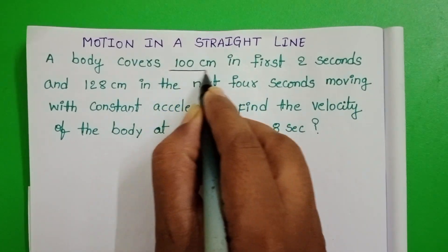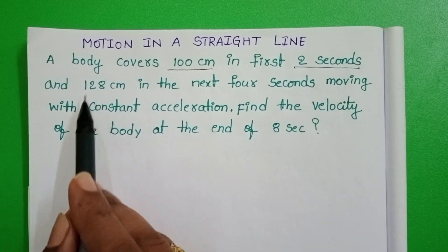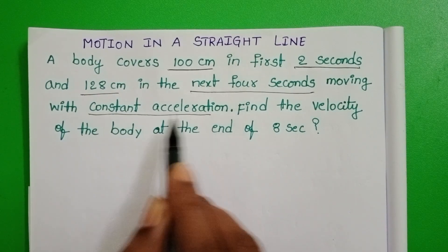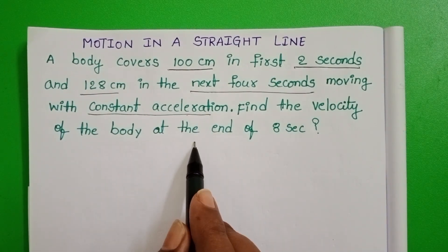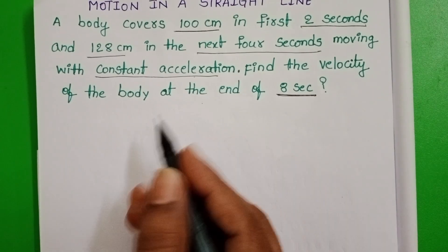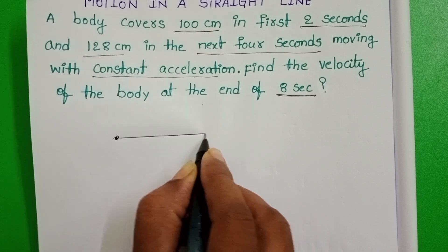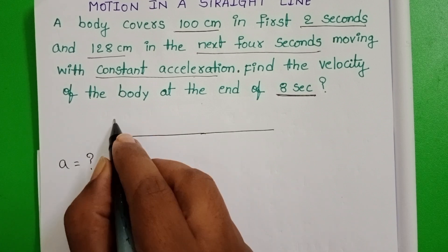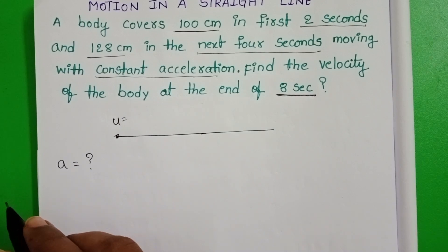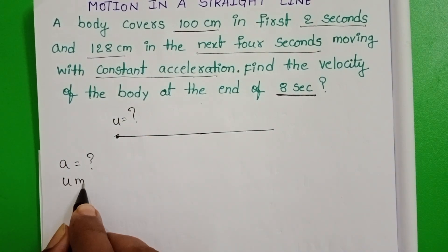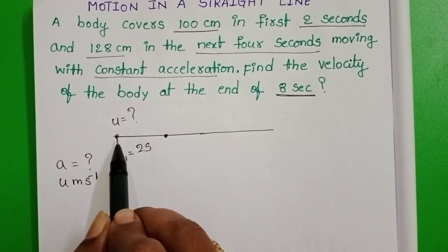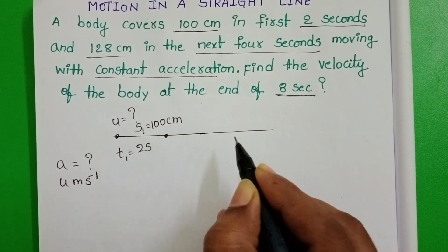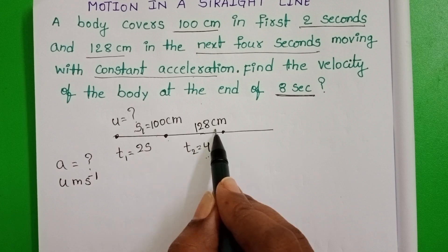A body covers 100 cm in the first 2 seconds and 128 cm in the next 4 seconds, moving with constant acceleration. Find the velocity of the body at the end of 8 seconds. In the given question, a body is moving with constant acceleration. The acceleration is constant but we don't know its value, and we also don't know the initial velocity of the body.